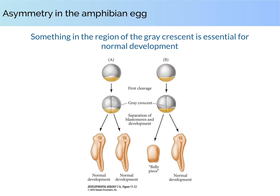However, when this experiment was performed so that the constriction still passed through both the animal and vegetal poles but was instead perpendicular to the plane of the first cleavage — separating the future dorsal and future ventral sites — so that one side received the Gray Crescent and the other did not, only the side that received the Gray Crescent cytoplasm, the future dorsal side, was able to give rise to a normal larva. The other side produced a mass of disorganized ventral cells, labeled as the belly piece, which contained tissues from all three germ layers but lacked all dorsal structures including the notochord and nervous system.